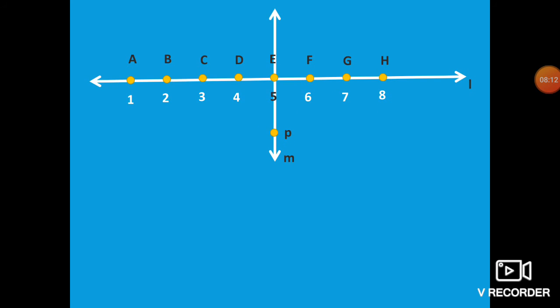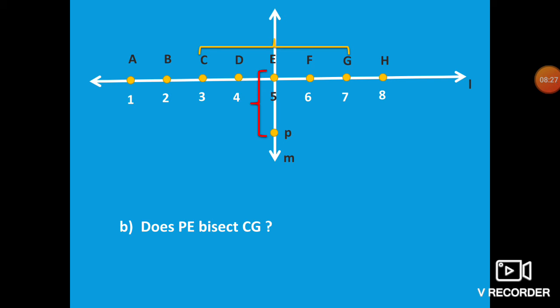Question B: Does PE bisect CG? The vertical line PE — where is CG? From C to E is 2 centimeters and from E to G is also 2 centimeters. Therefore we can say PE bisects CG — yes, that is the answer.